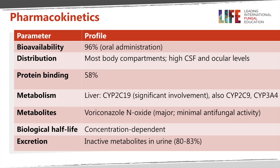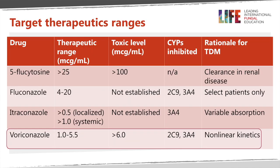To summarize the pharmacokinetics: voriconazole is highly orally bioavailable, gets into almost all body compartments including the CSF and eye, has this intermediate protein binding, and has this important metabolizer variability. The principal metabolite is voriconazole N-oxide, and there is suspicion — though not well documented — that in very high concentrations that metabolite itself can be toxic. The biological half-life is partly concentration dependent, and most inactive metabolites are excreted in the urine having been generated by the liver.